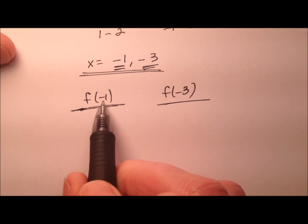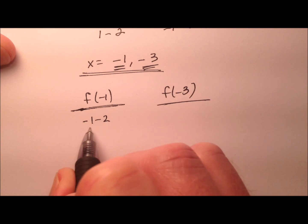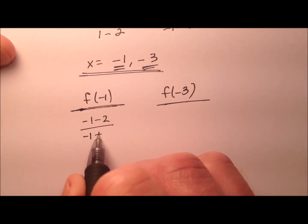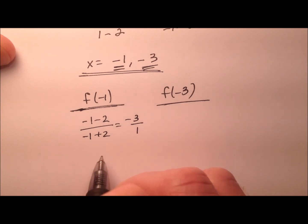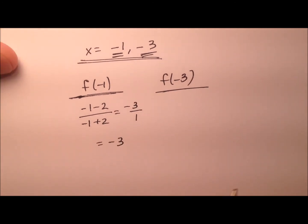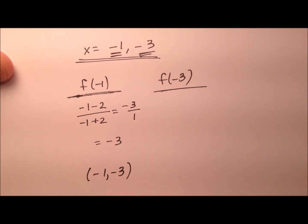So our function was x minus 2 over x plus 2. So this is going to be a negative 1 minus 2 over a negative 1 plus 2. So negative 3 over 1 equals negative 3. So this ordered pair is negative 1, negative 3 for the first one.